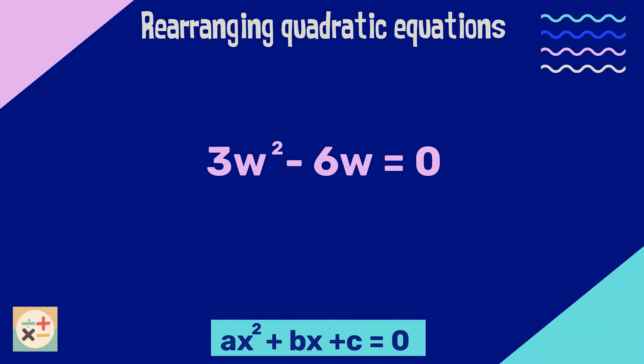This last example doesn't need any rearranging. However, you may notice there is no constant term. That is because the constant term in this equation is equal to zero, so it isn't shown. This equation is already in the standard form for quadratic equations. Let's identify the terms.